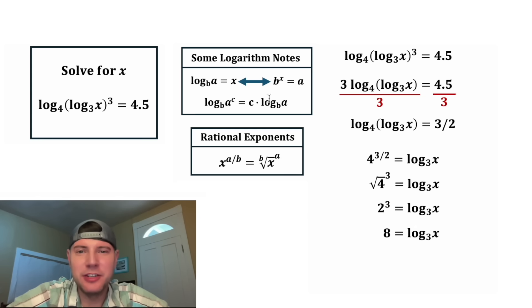And now we're ready to do these notes again. This to the power of this equals this. So this to the power of this will equal this. We have 3 to the 8th power is equal to x. And 3 to the 8th power is 6561.